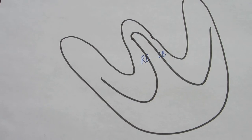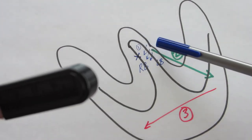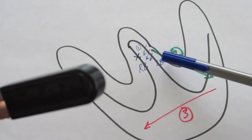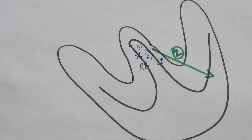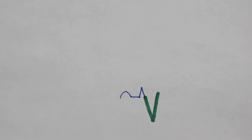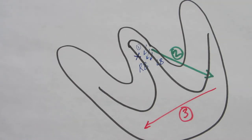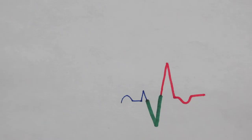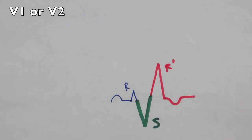In right bundle branch block, the RB stands for right bundle and LB for left bundle. Depolarization is blocked on the right bundle, and the septum depolarizes moving toward V1 — giving a positive R wave in V1. Then depolarization moves down the left bundle away from V1, giving a negative S wave. Finally depolarization moves toward the right ventricle and toward V1, giving us the R prime.